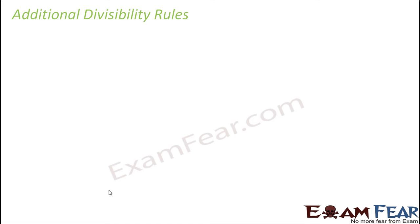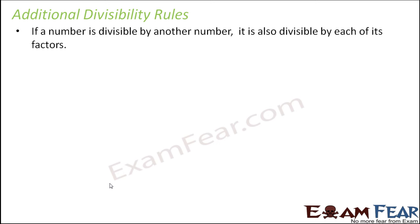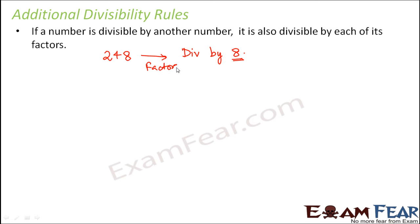Based on the concepts of common factors and multiples, we will talk about some additional divisibility rules. If a number is divisible by another number, it is also divisible by each of its factors. For example, 248 is divisible by 8. The factors of 8 are 1, 2, 4, and 8. So 248 will also be divisible by 1, 2, 4, and 8.